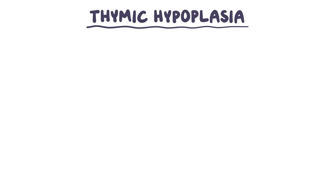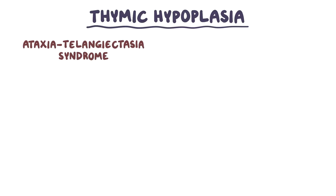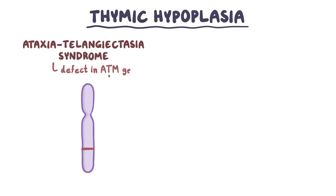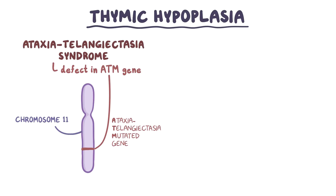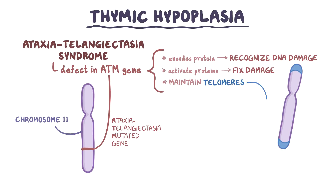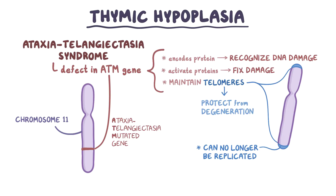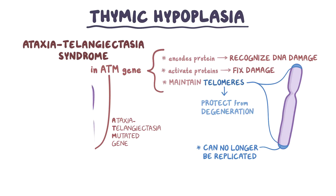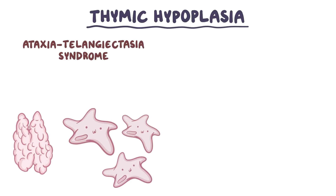Thymic hypoplasia also happens in people with ataxia telangiectasia syndrome, and there it's caused by a defect in the ATM gene, or ataxia telangiectasia mutated gene, found on chromosome 11. The ATM gene encodes a protein whose job is to recognize DNA damage and activate proteins to fix the damage. Another function of the gene is to maintain the distal portion of our chromosomes called telomeres. These telomeres protect the ends of the chromosome from degeneration, and when the telomere becomes too short, the chromosome can no longer be replicated. In ataxia telangiectasia syndrome, rapidly dividing cells like thymic cells die prematurely, which leads the thymus to atrophy.